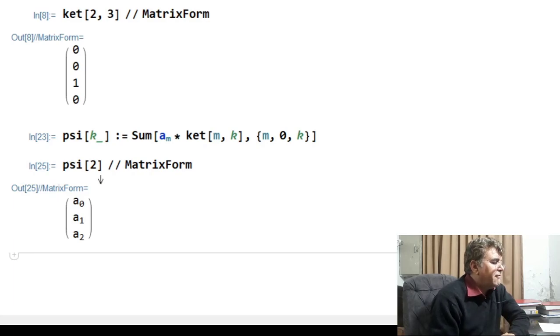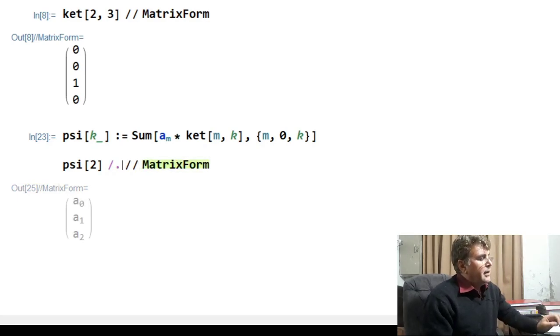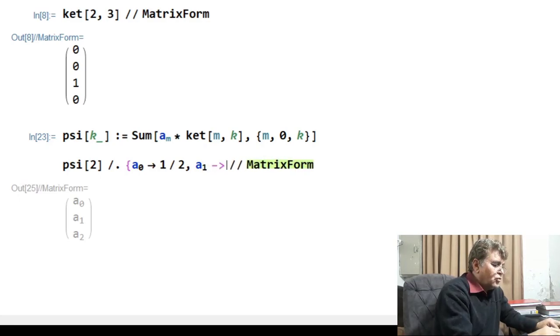I will have a superposition state for a qutrit. I can write the maximum superposition state by defining the values of the ket. And that I can do by invoking the replace command. The replace command invokes through a forward backslash followed by a dot. And if I want to replace the value of many variables, then I have to construct a list. And here, I want to give the values to the probability amplitude. And the probability amplitude a_0 goes to 1 divided by square root 2. And similarly, the probability amplitude 1 goes to 1 divided by square root 2. So,